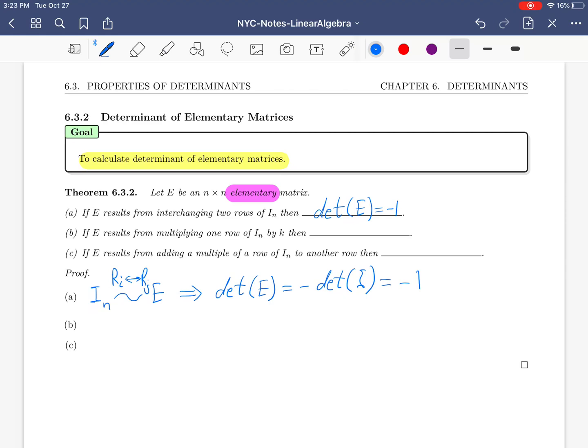Part B: If E results from multiplying one row of I by k, then the determinant of E is k.